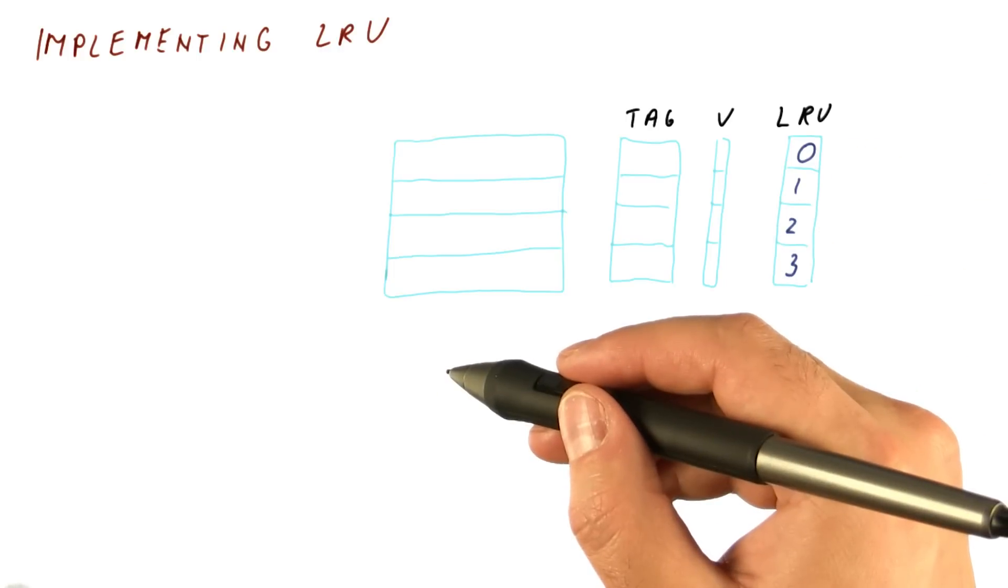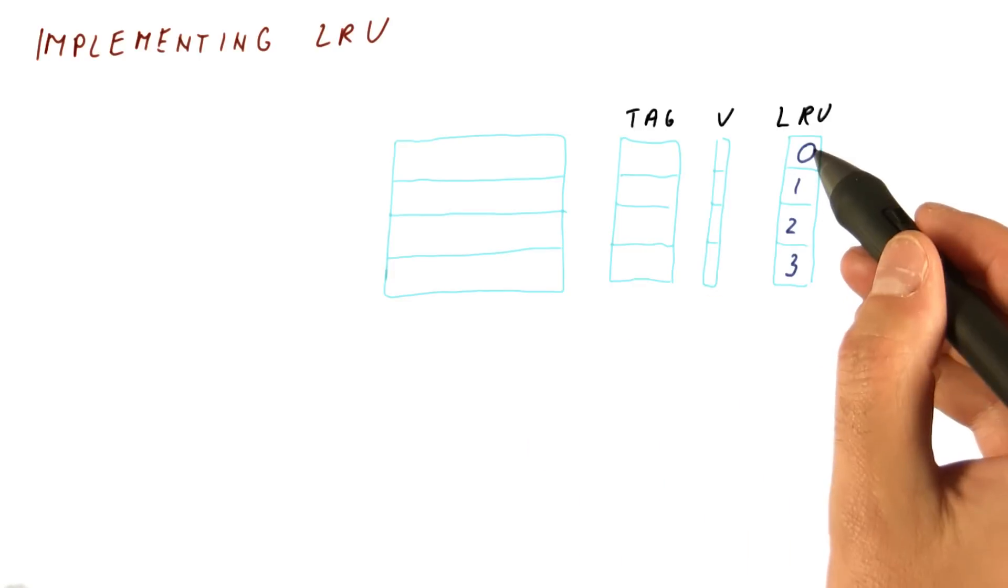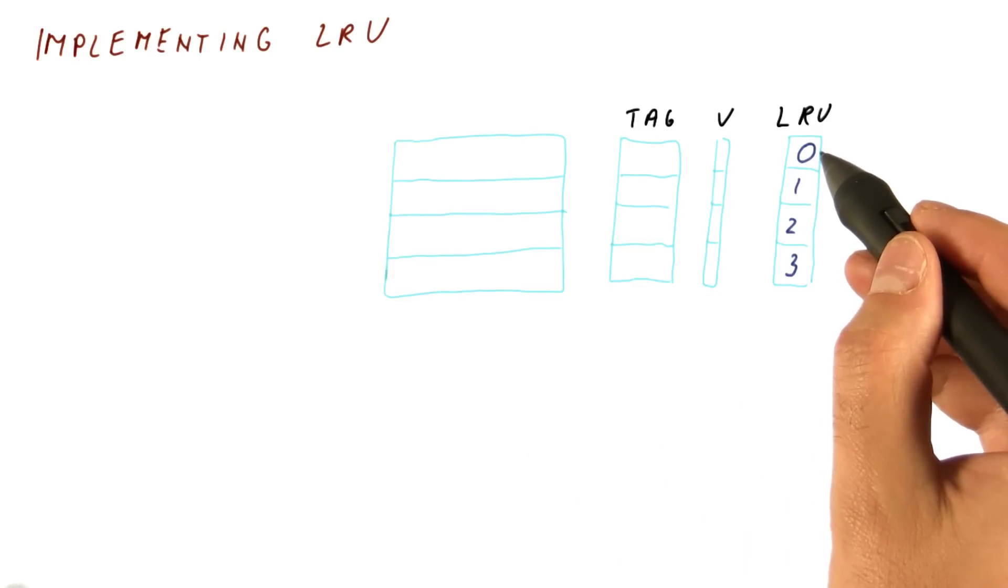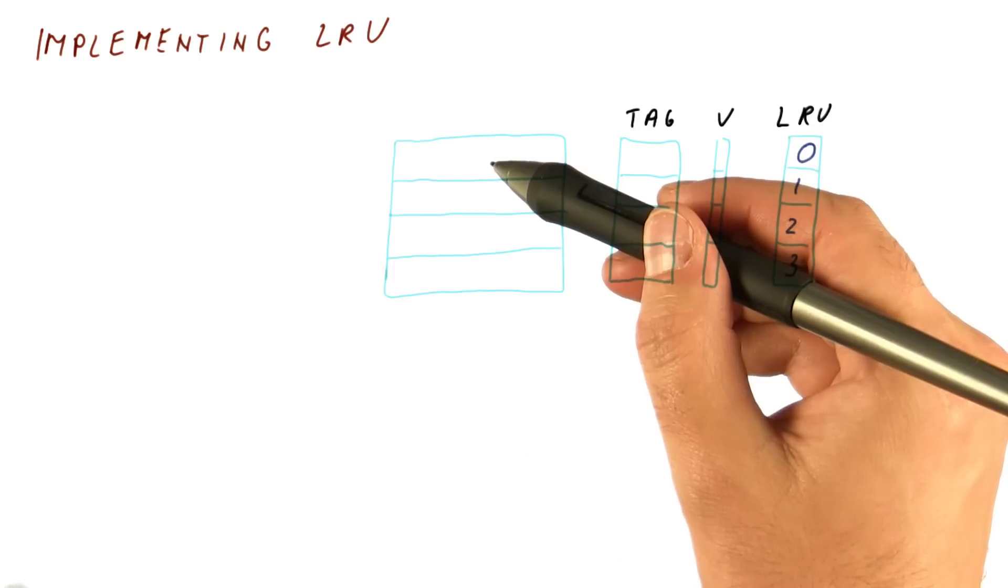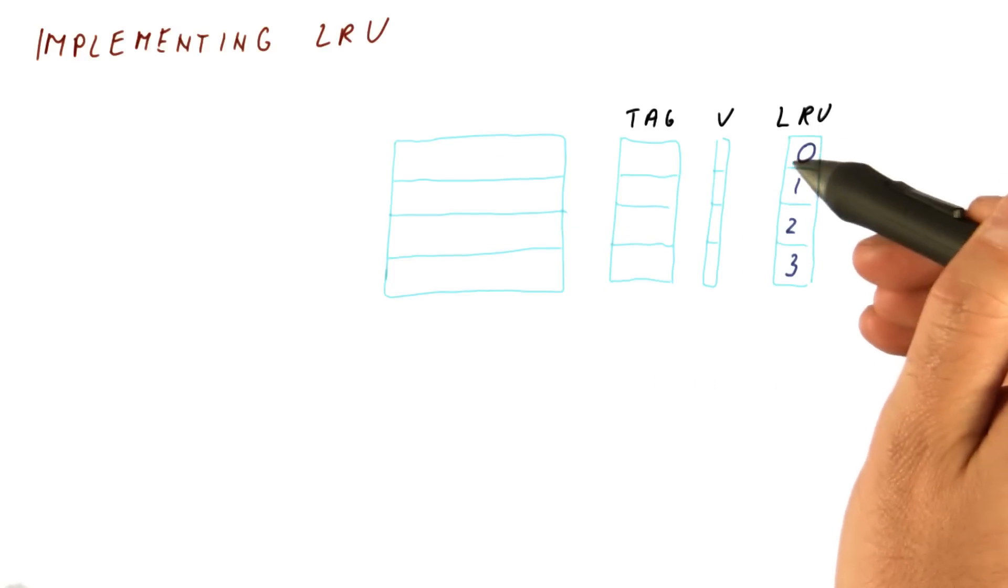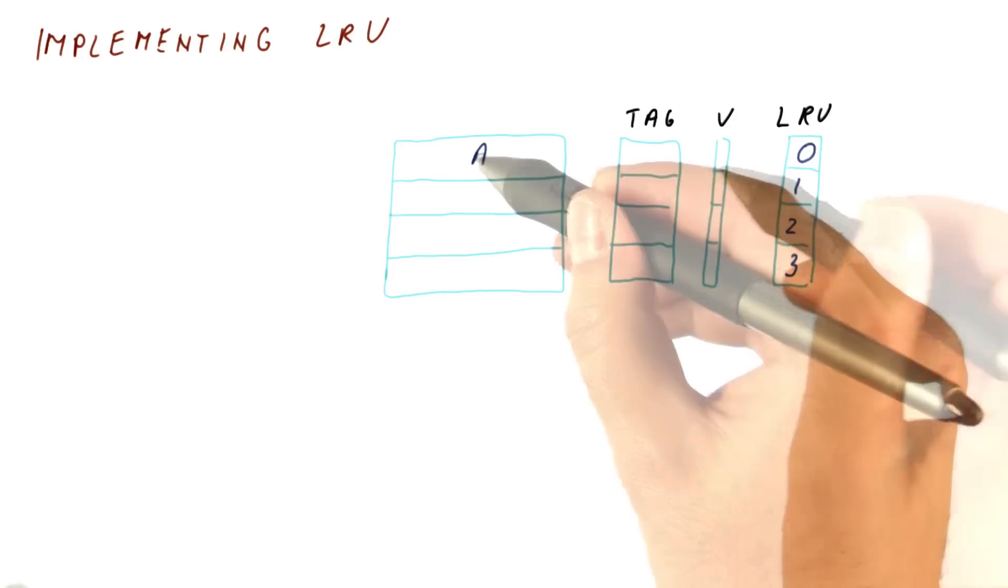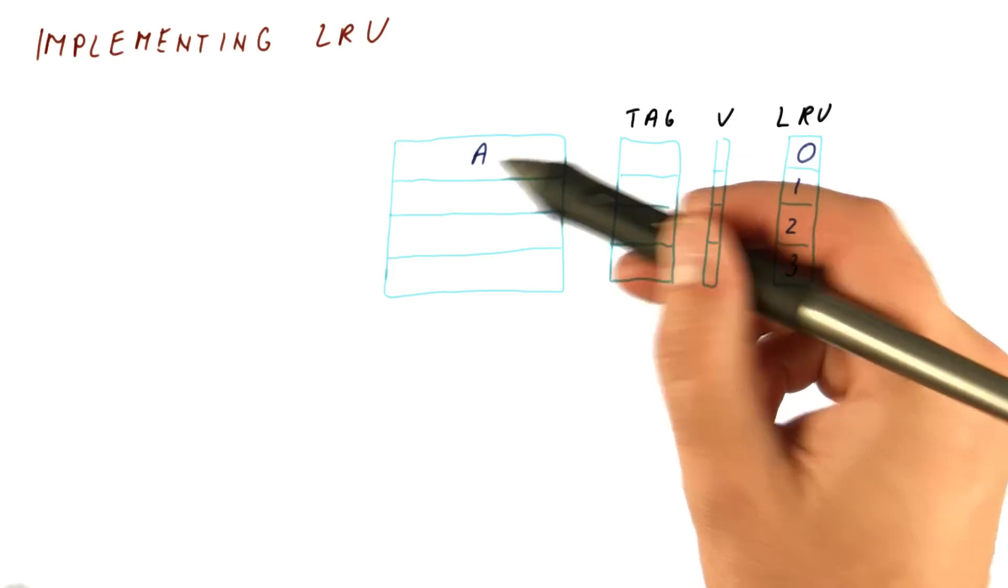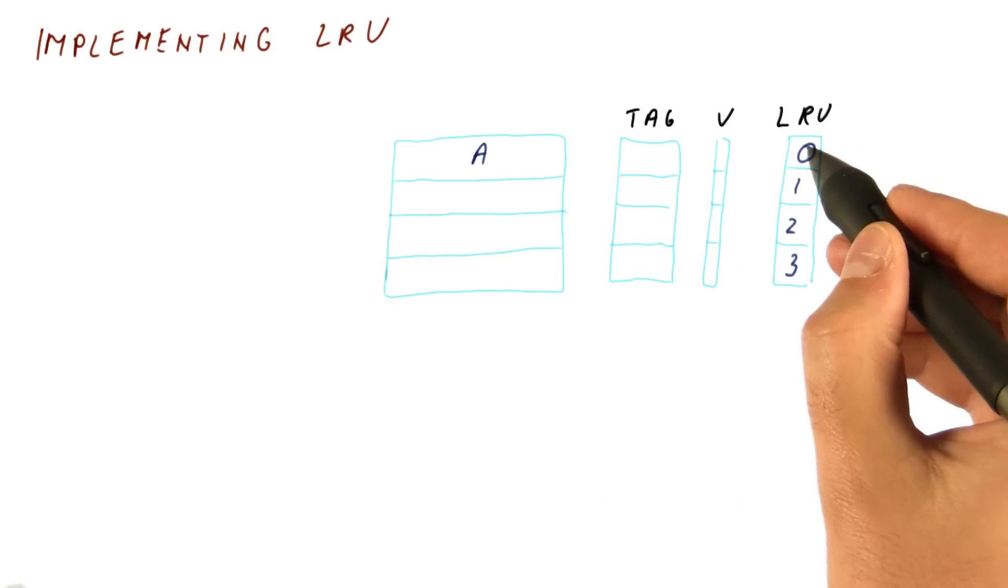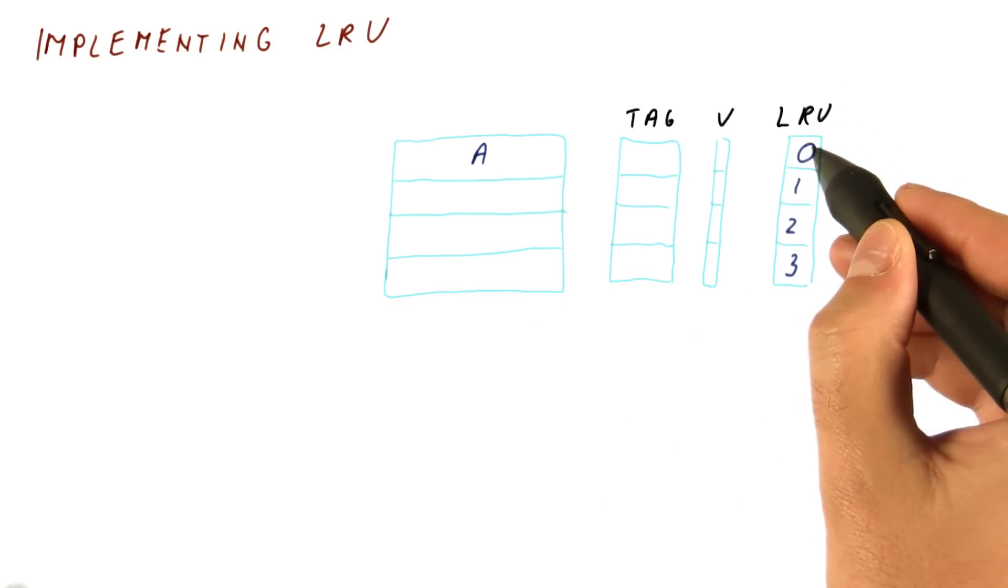When we want to replace something, we will replace the block whose counter is currently 0 because that's going to be the least recently used block. So let's say that we access some block A and we need to put it somewhere. We will choose the place with a 0 counter and put it there. Now that the block is placed there, the processor accesses it.